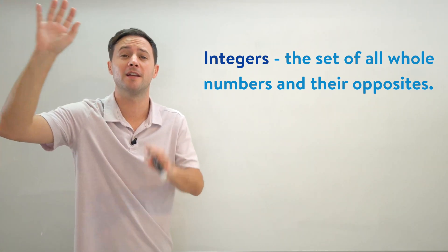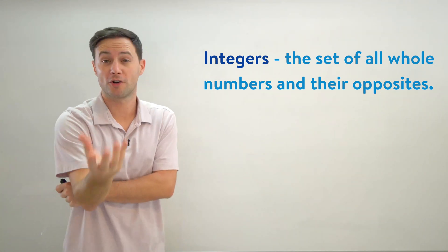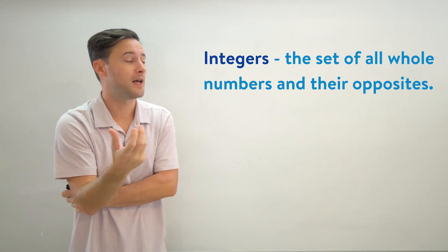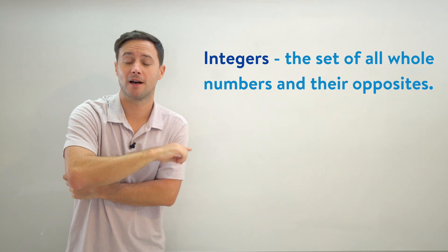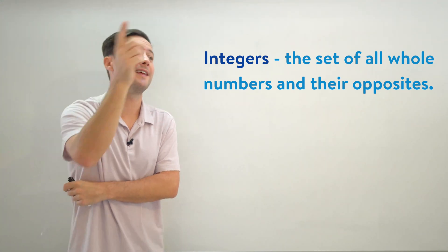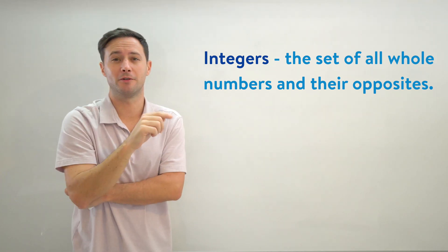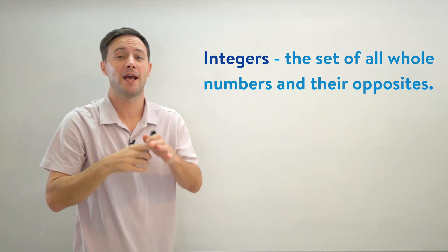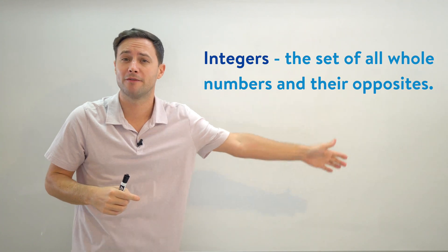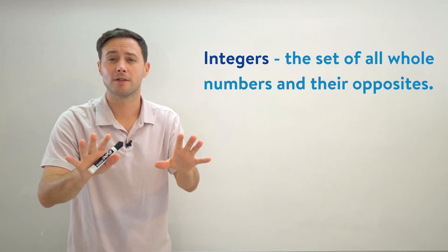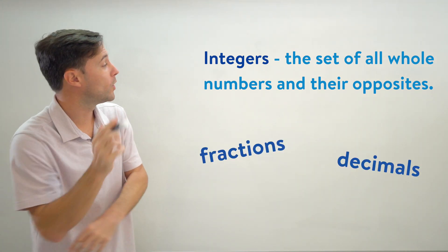Those are whole numbers and those are also part of integers. Now the opposites of those whole numbers - so instead of one, the opposite of one would be negative one, opposite of two is negative two, opposite of three is negative three, all the way down to negative infinity. So those are integers. What you'll notice is no fractions and no decimals. That's really important.